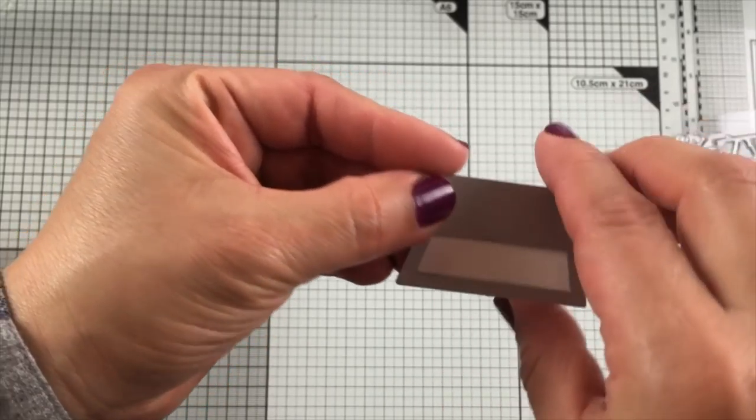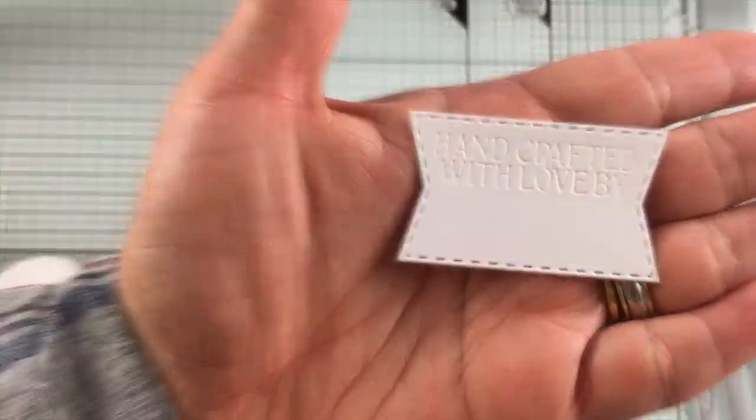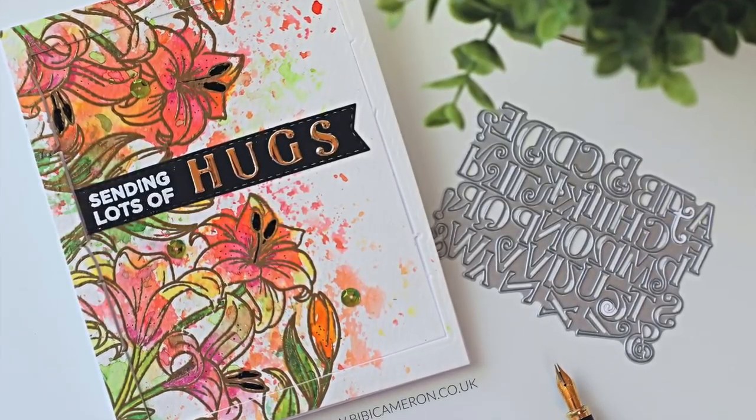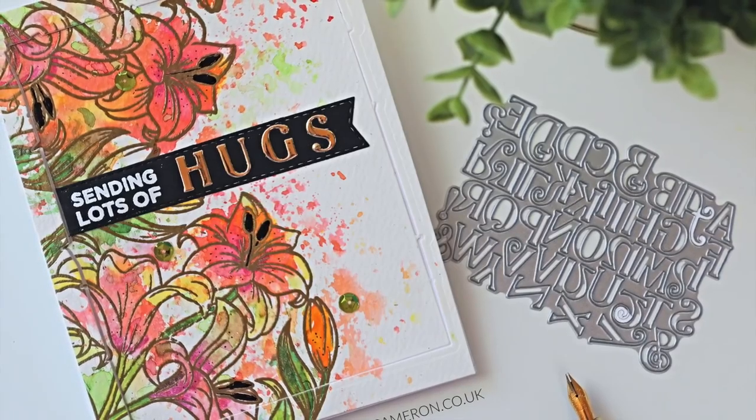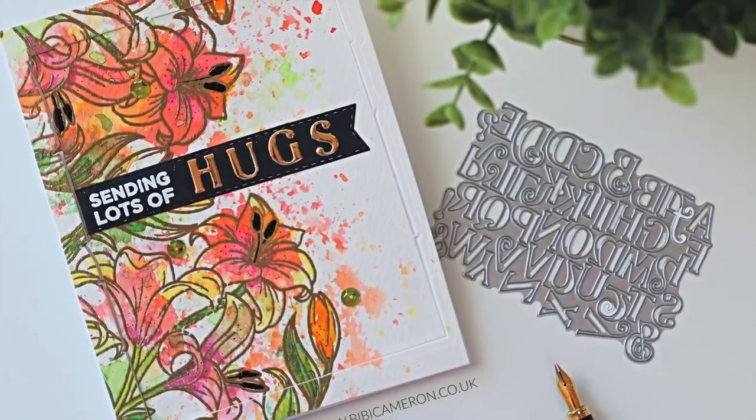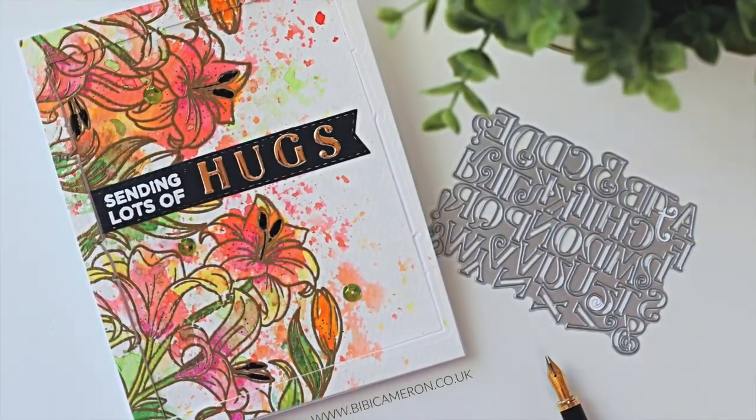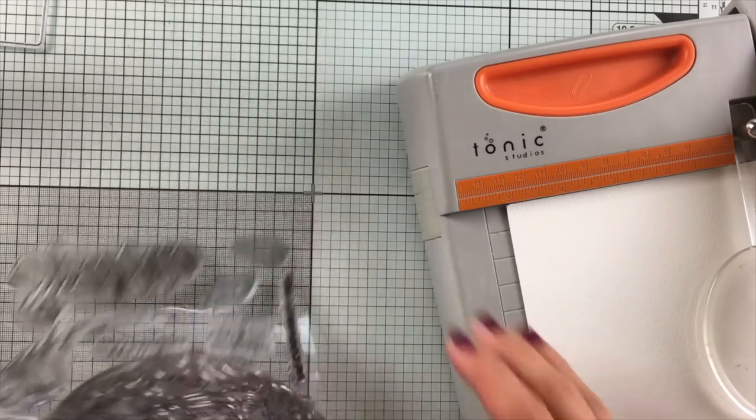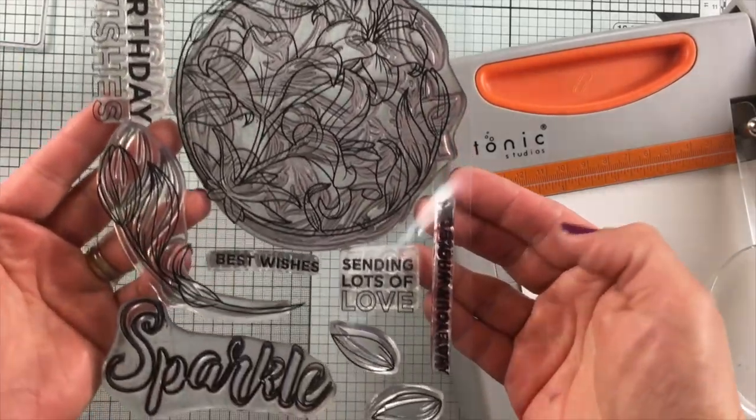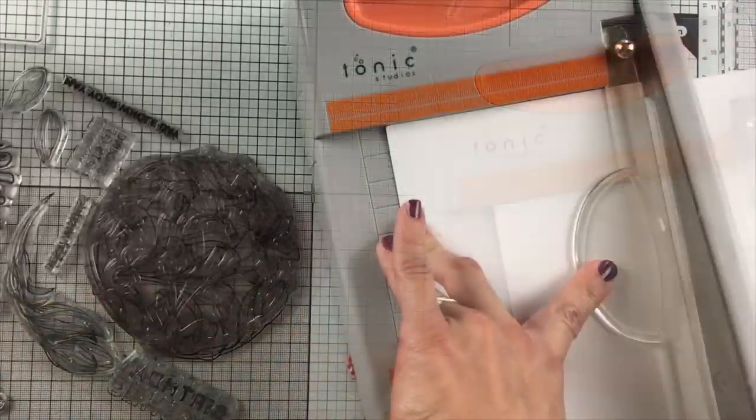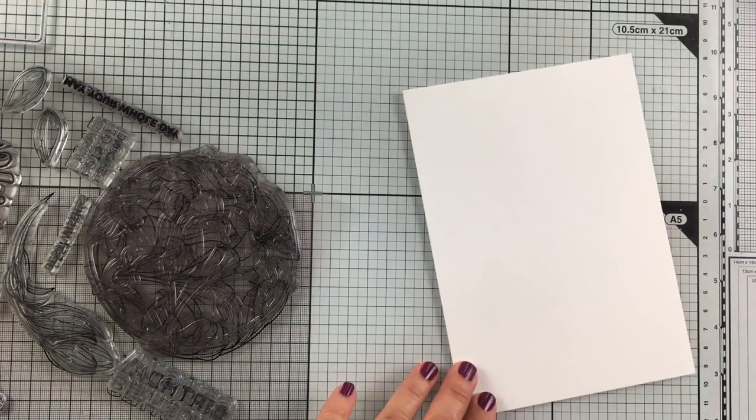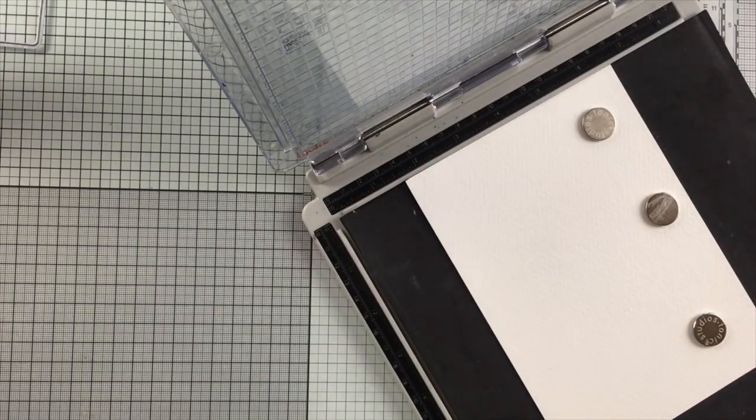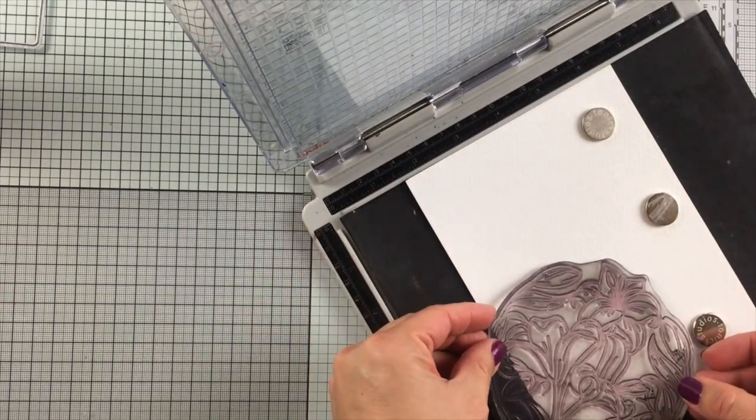The first thing I wanted to do with some of the products in this kit is a simple decorative banner and custom sentiment. I have this stamp set called Sparkle by Tonic Studios, and I'm using watercolor paper that measures five inches by seven inches. I'm going to be using the Misti Stamping Platform.